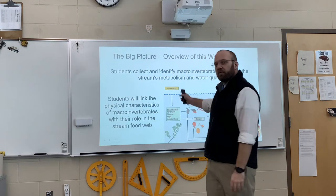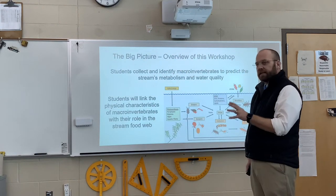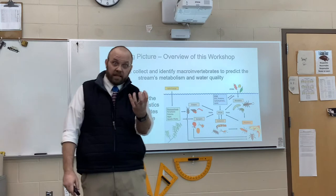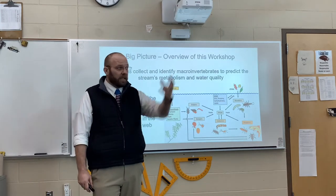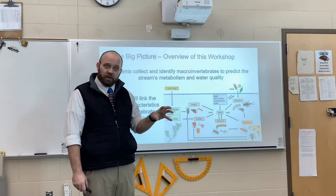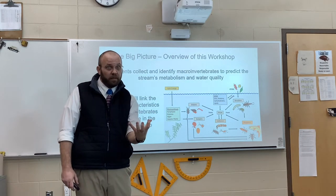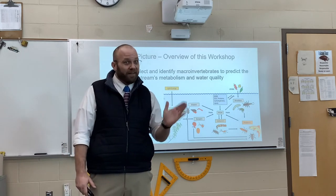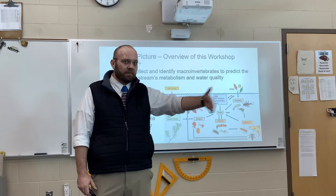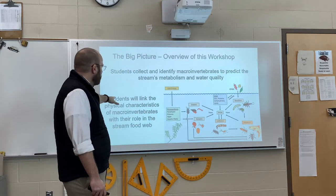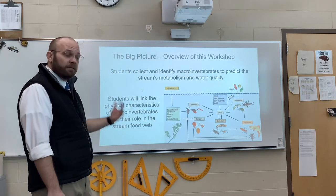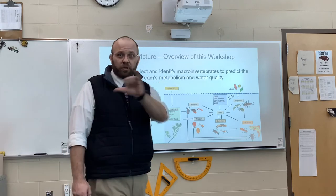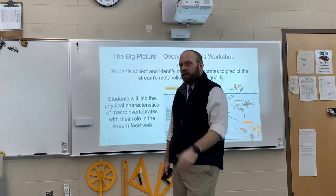The big picture of the RAIL project: students collect and identify macroinvertebrates to predict a stream's metabolism. Where does it get its carbon? Is it carbon that falls in from leaf litter and woody debris, or is it in-stream carbon from algae and aquatic vegetation? Where's the food source coming from, and how is that food metabolized as it moves through the stream? Students link physical characteristics of macroinvertebrates with their role in a stream food web — big on structure and function, a huge component in biology and ecology.